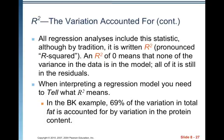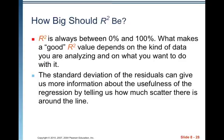When interpreting a regression model, you need to tell what R squared means. In the BK example, 69% of the variation in total fat is accounted for by variation in the protein content. R squared should always be between 0% and 100%.